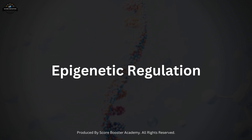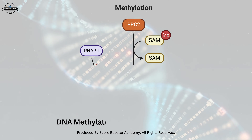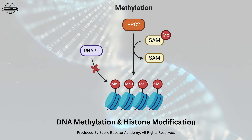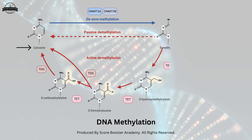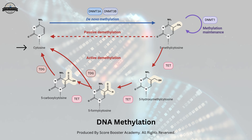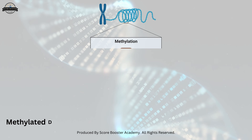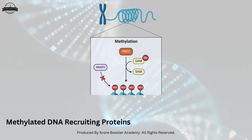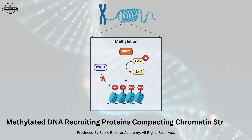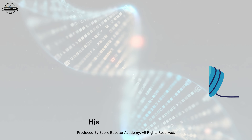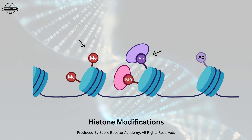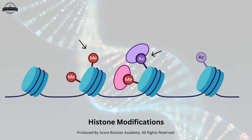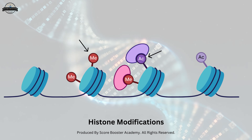Epigenetic modifications also play a crucial role in regulating transcription. These modifications include DNA methylation and histone modification, which can alter the accessibility of the DNA to the transcription machinery. DNA methylation typically occurs at cytosine residues within CpG islands and is associated with gene silencing. The methylated DNA recruits proteins that compact the chromatin structure, making the DNA less accessible for transcription. Histone modifications, such as acetylation and methylation, can either promote or repress transcription, depending on the specific amino acids that are modified and the type of modification.